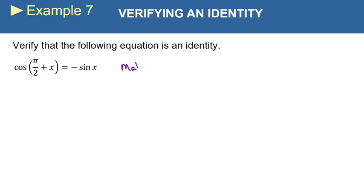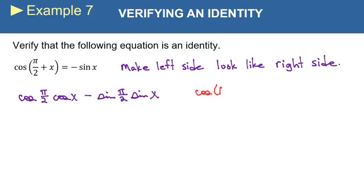So it's going to become cosine a cosine b minus sine a sine b. So cosine π over 2 cosine x minus sine π over 2 sine x. And that's just using the identity off the formula sheet.